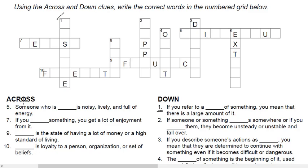So let's take the fifth one. If you see here, the fifth one says, someone who is dash is noisy, lively and full of energy. So the fifth word, which is across, someone who is dash is noisy, lively and full of energy. And boisterous is the word.